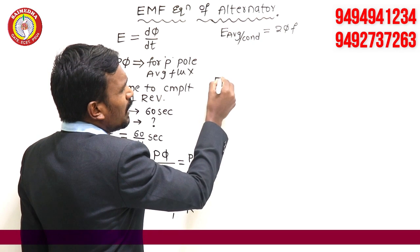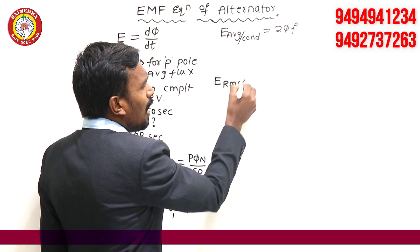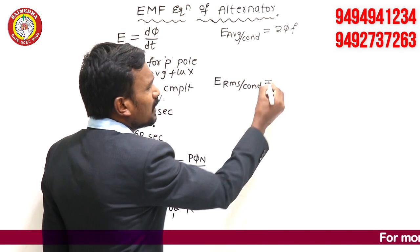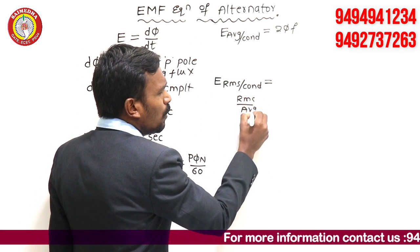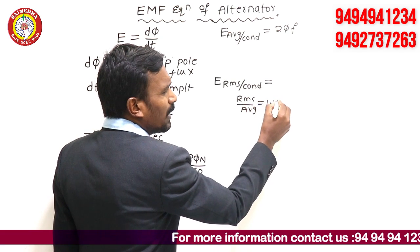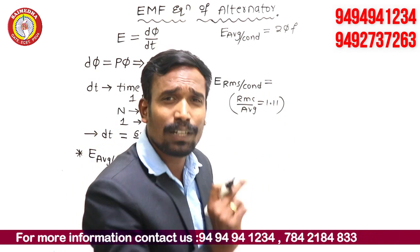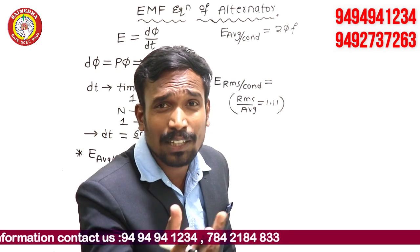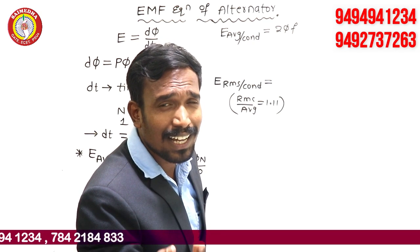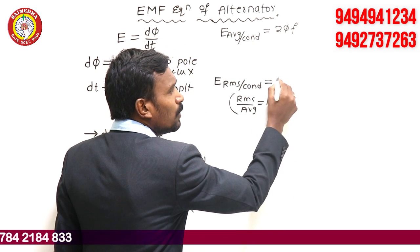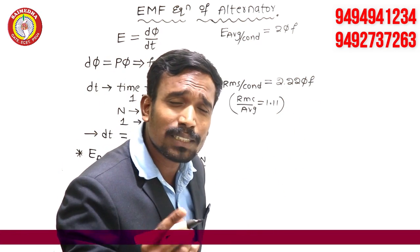Now I want E RMS per conductor. For a sinusoidal wave, we know that RMS divided by average equals 1.11. So if you want RMS, multiply average with 1.11. E RMS per conductor is equals to 1.11 × 2Φf = 2.22Φf. This is what E RMS per conductor.